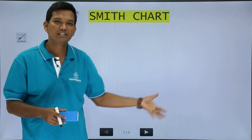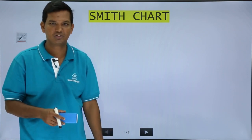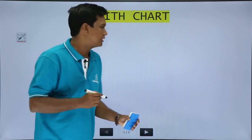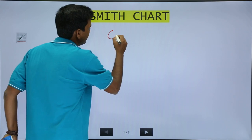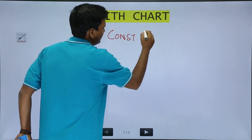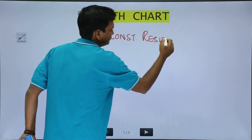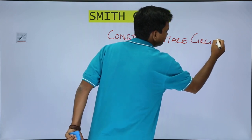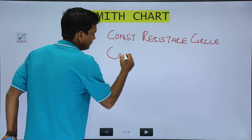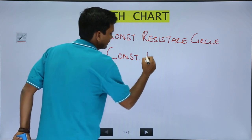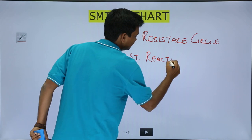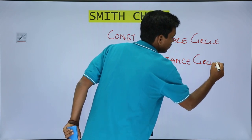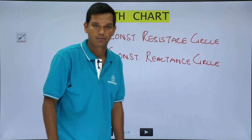We will go back to the Smith Chart and see how it is useful in finding all those things in future videos. The Smith Chart has two things: it has something called a constant resistance circle and a constant reactance circle.